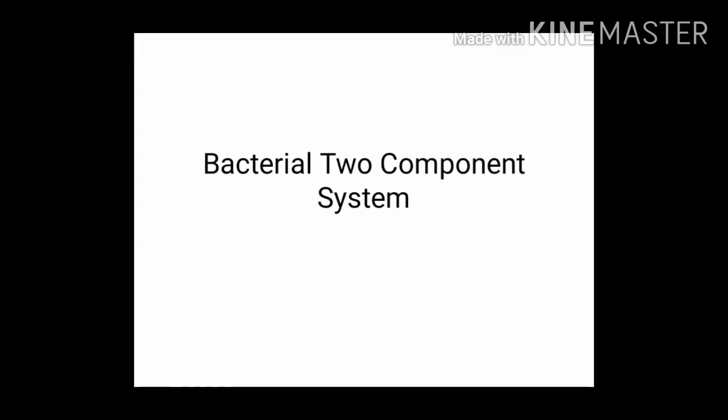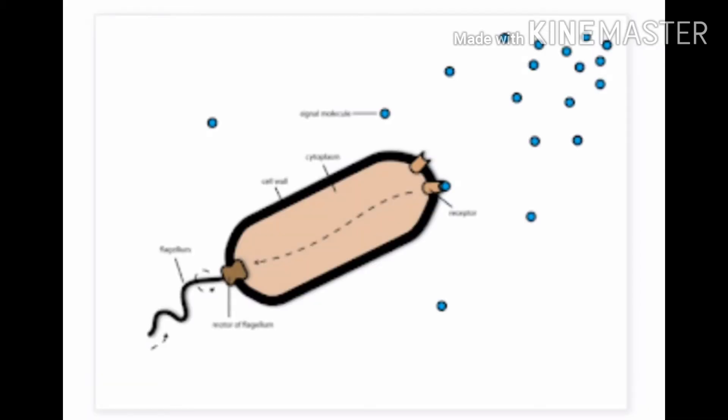In this video we are going to understand about the two-component regulatory system in bacteria. This system is related with how a bacteria responds to the changes undergoing in its environment, and according to these environmental signals it gives a particular response.